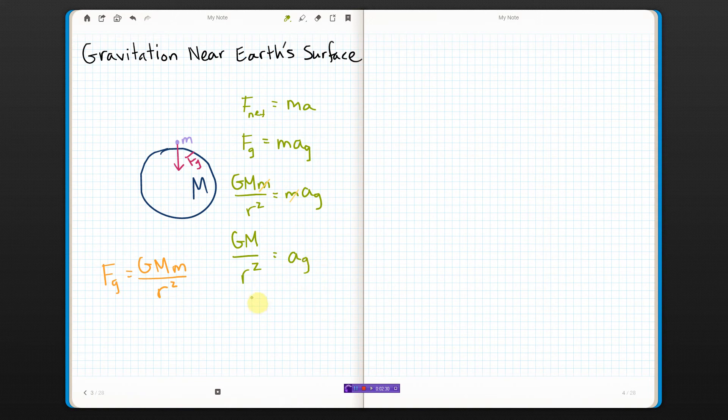This is the acceleration of gravity. Now if we put in the numbers for Earth, we get the mass of Earth and the radius of the Earth. Keep in mind this r is supposed to be the distance between their centers.